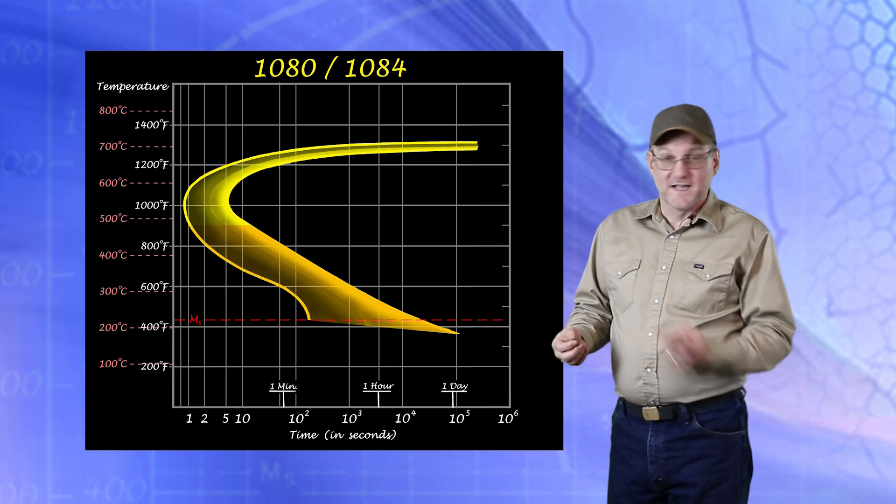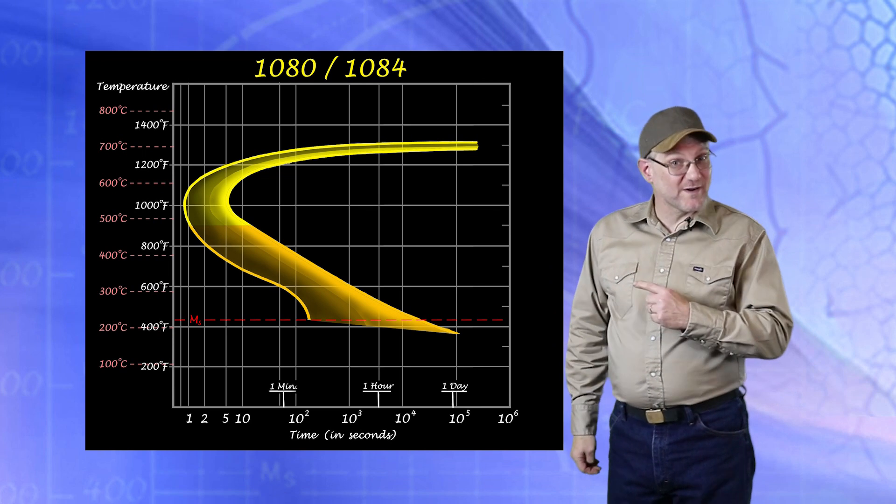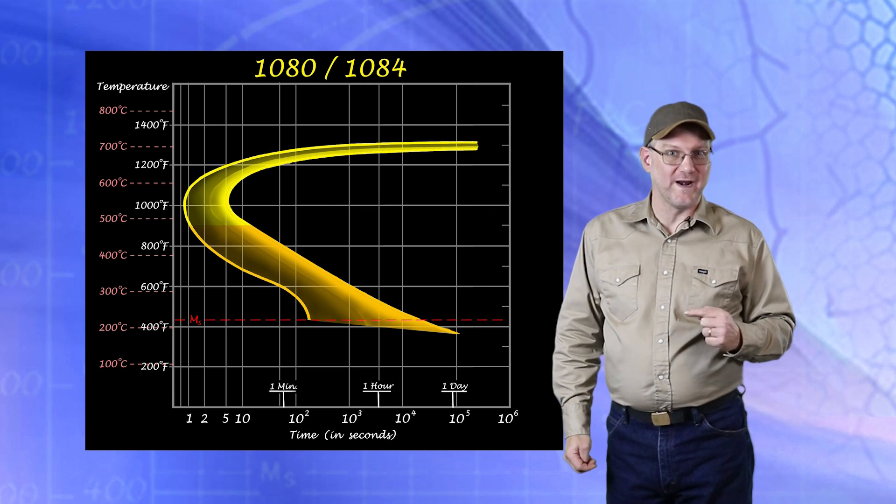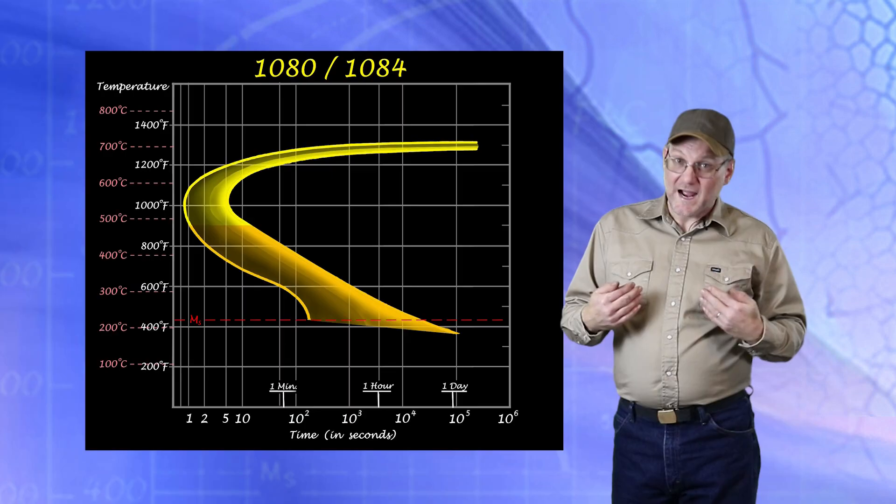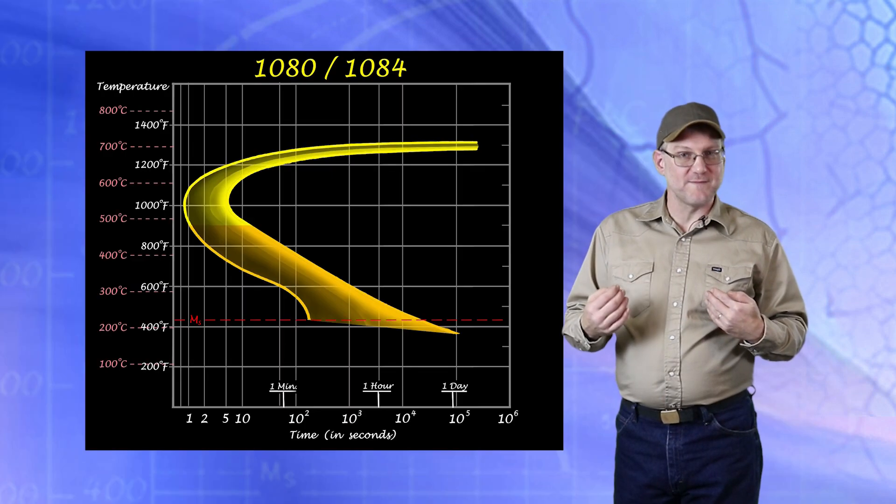This diagram adds time to what happens in the specific chemistry of our steel. It is often called an isothermal transformation diagram, but I prefer its other name which describes it so well: the TTT diagram for our steel.